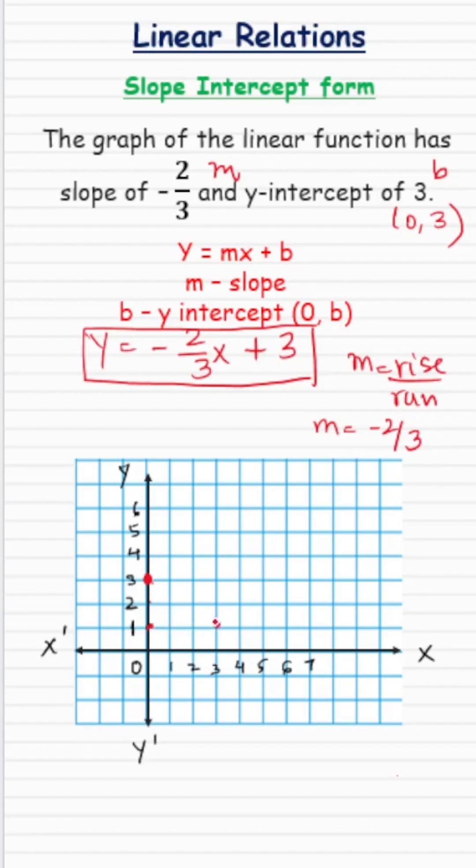So 1, 2, 3. That's my second point. Now finally I will draw a line passing through these two points, and that is the graph of this given linear function.